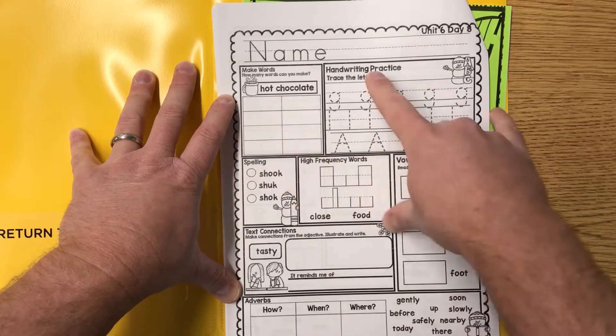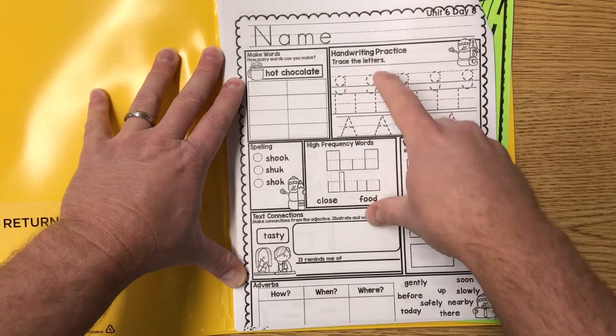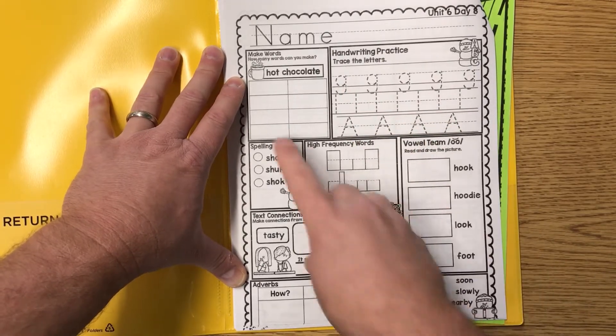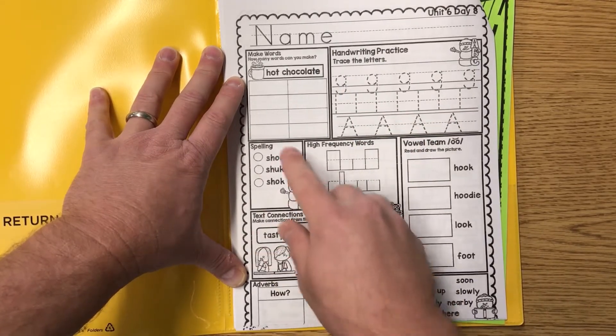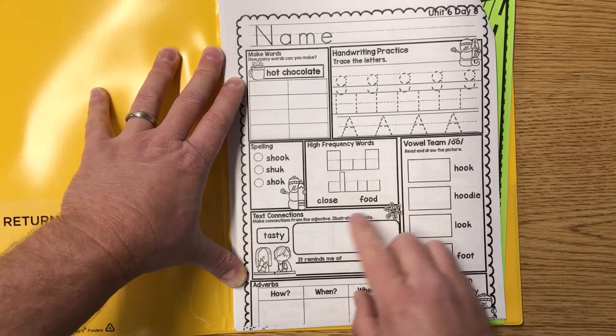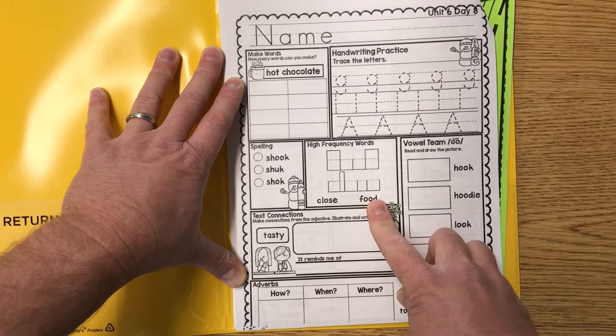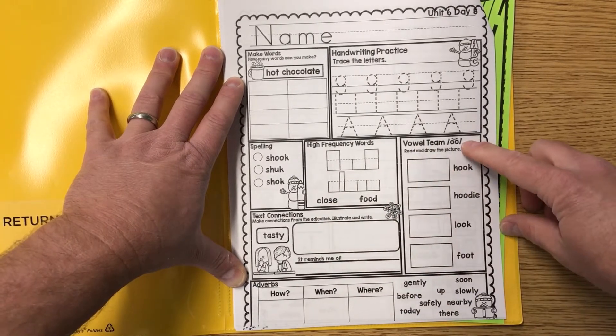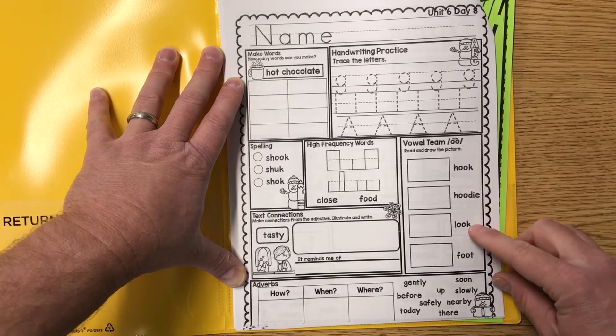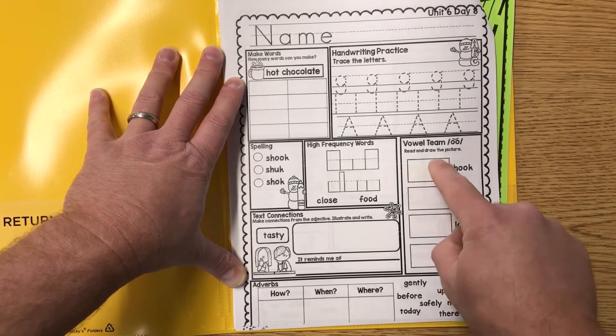Handwriting practice: go ahead and trace the letters g, l, and capital A. Try to be neat please. Spelling: what's the right way to spell 'shook'? High frequency words: we have 'clothes' and 'food'. Vowel team: we have the 'uh' sound like hook, hoodie, look, and foot.